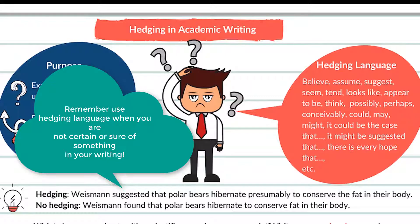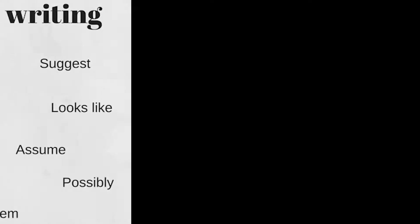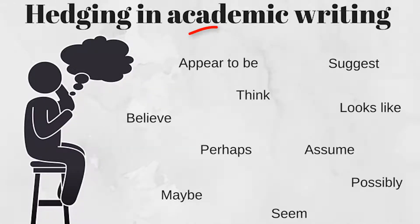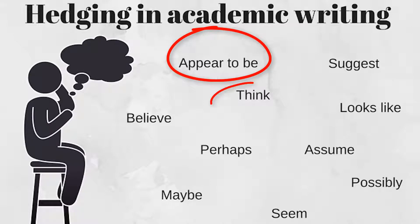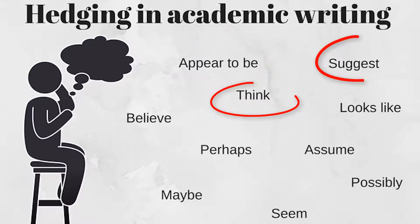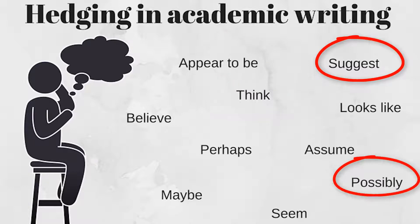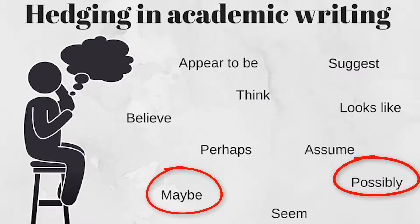Let's have a look at some other hedging language, such as "maybe", "appear to be", or "think", or "suggest", "possibly", or even "maybe". So you can use this vocabulary in your academic writing when you're not sure about something.